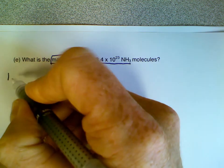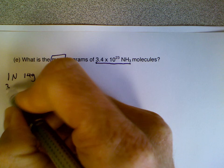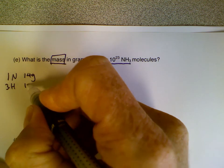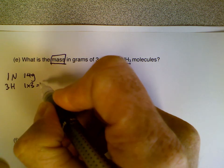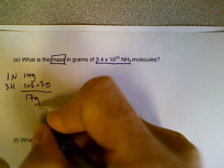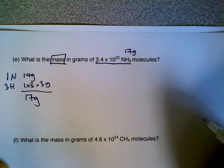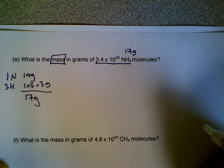So 1N has a mass of 14 grams, 3 hydrogen is a mass of 1 times 3, 3 grams. So the molar mass of NH3 is 14 plus 3, which is 17 grams. I'm going to write that here above the NH3. The molar mass of NH3 is 17 grams.